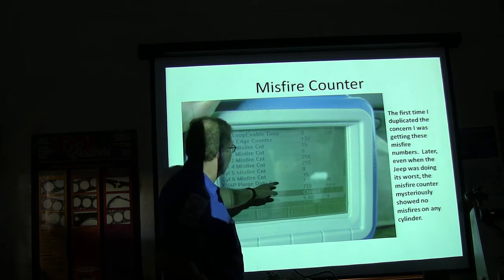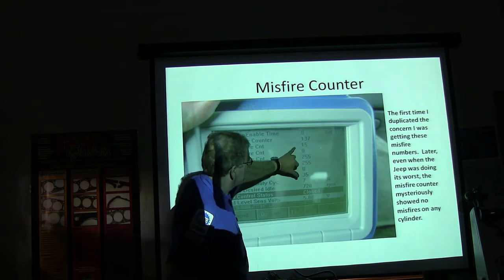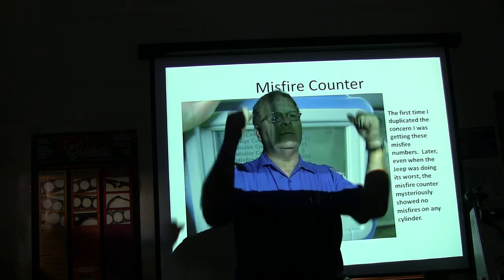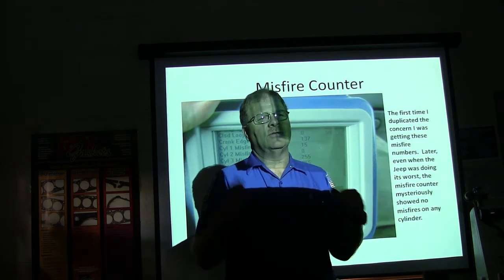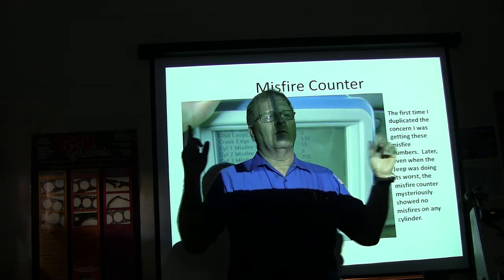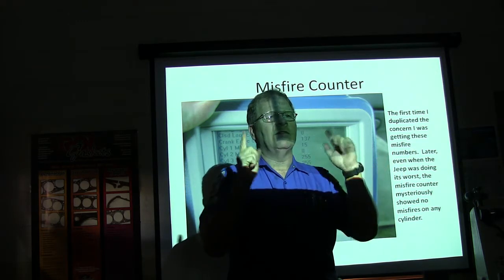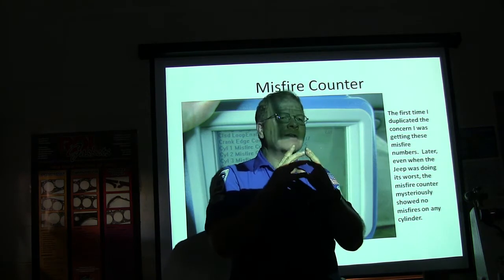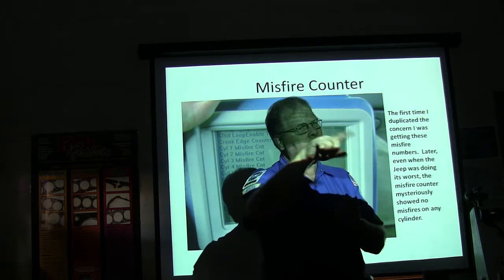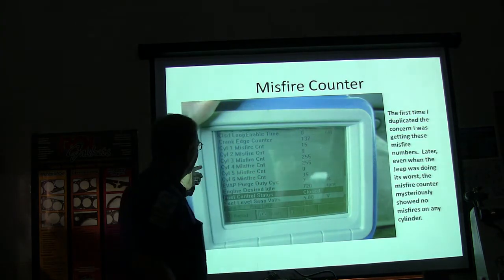We got 255 misfires on each one of them. We got 35 on six, 15 on one. These two are companions and three and four are companions. Companions are the ones that are up at the same time. When they're up at the same time, those are companions. One's on exhaust, one's on compression. What are the companions on a straight six? One and six, two and five, three and four. Those are companions. If you have a distributor, the one that's the companion is going to be the one that's on the opposite side of the cap in the firing order.